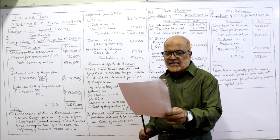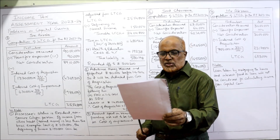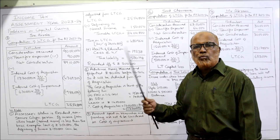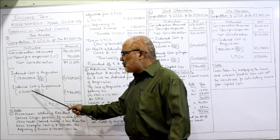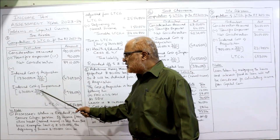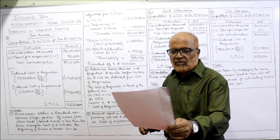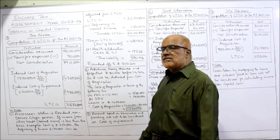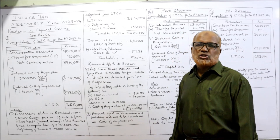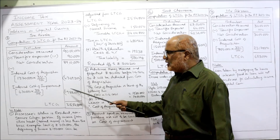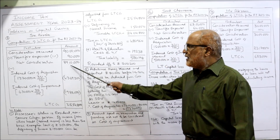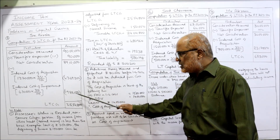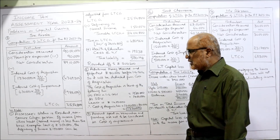Indexed cost of improvement: one more floor added in 2002-2003 for Rs. 6,30,000. This is improvement. Indexed cost of improvement = Rs. 6,30,000 into 331 divided by 105 — index number 105 at the time of adding the floor — giving Rs. 19,86,000. So LTCG = Rs. 89,10,000 minus Rs. 43,69,200 minus Rs. 19,86,000 = Rs. 25,54,800.